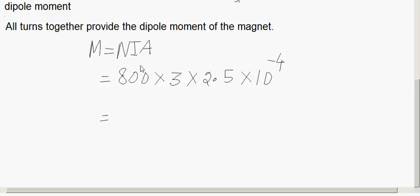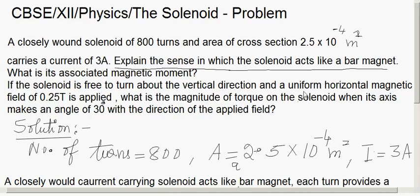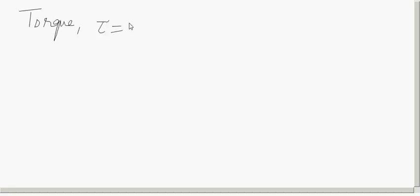So this gives us 800 multiplied by 3 multiplied by 2.5 into 10 to the power minus 4. Doing the calculation, the magnetic moment m is 0.6 newton meter square, since the unit is current multiplied by area. The axis of the solenoid makes 30 degrees with the direction of the applied field, so the torque acting on the solenoid is given by torque equals m B sin theta.